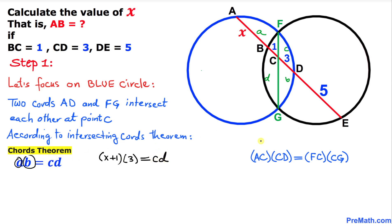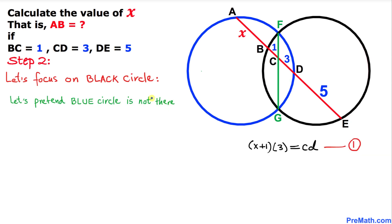So AC is x plus 1 and CD is 3 units. FC is c and CG is d. This gives us Equation 1: 3(x + 1) = c · d.